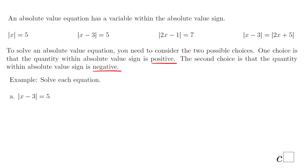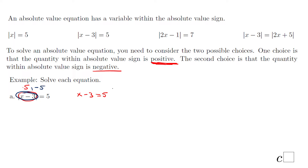So let's take a look at example A and see what I meant. The first choice will be when x minus 3 is positive, so we're going to have x minus 3 equals 5. While the second choice, when the same quantity inside the absolute value, will be negative — negative 5 in this case.